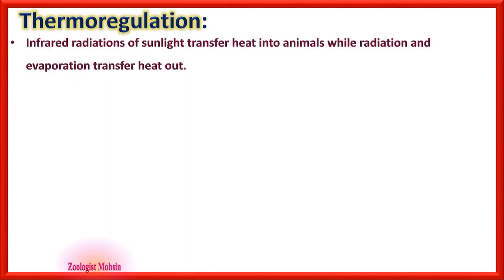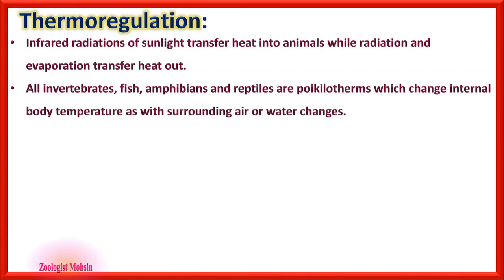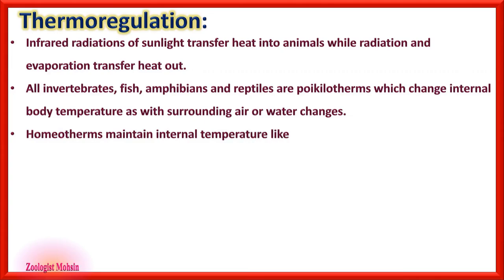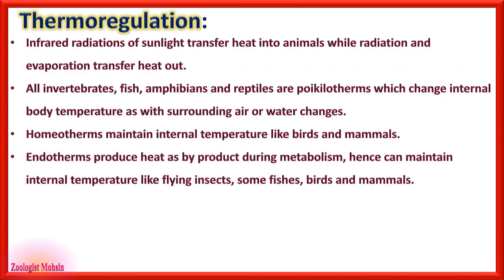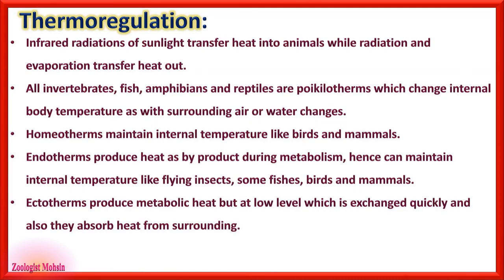Infrared radiation of sunlight transfers heat into animals, while radiation and evaporation from the body transfer heat out. All invertebrates, fish, amphibians, and reptiles are poikilotherms, which change internal body temperature as surrounding air or water changes. Homeotherms maintain internal temperature, like birds and mammals. Endotherms produce heat as a byproduct of metabolism and can maintain internal temperature — flying insects, some fishes, birds, and mammals are endotherms.